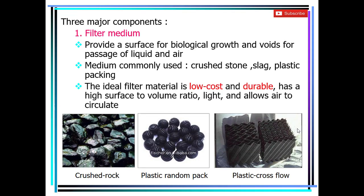The first major component is the filter medium, which provides surface area for biological growth and also provides voids for the liquid to pass through. As you can see in this picture, this is a plastic media, and through its cross section you can see how it provides a large surface area. Other materials that can be used include crushed stone, slag, and plastic packing.